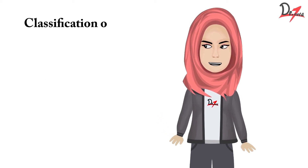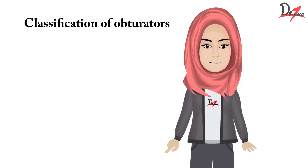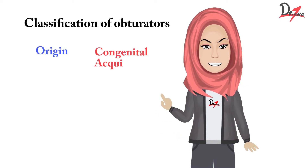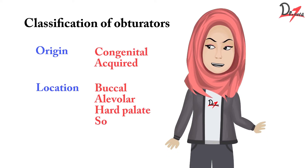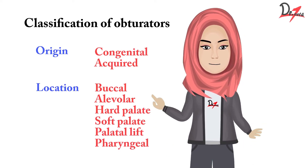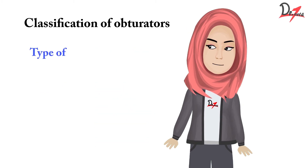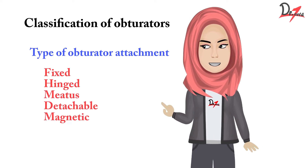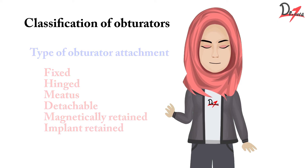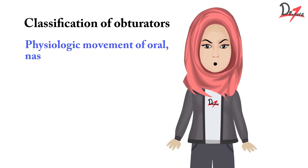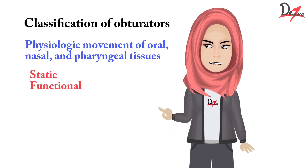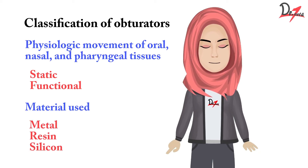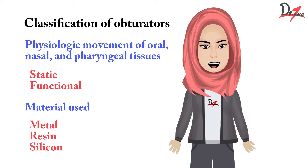Moving on to classification of obturators. Obturators can be classified by various means. According to the origin of discrepancy, it can be congenital or acquired. According to location of the defect, it can be buccal, alveolar, hard palate, soft palate, palatal lift, or pharyngeal obturator. According to the type of attachment to the basic maxillary prosthesis, it can be fixed, hinged, detachable, magnetically retained, or implant retained. According to the physiologic movement of oral, nasal and pharyngeal tissues, it can be static or functional. And depending on the material used, it can be metal, resin, or silicon.